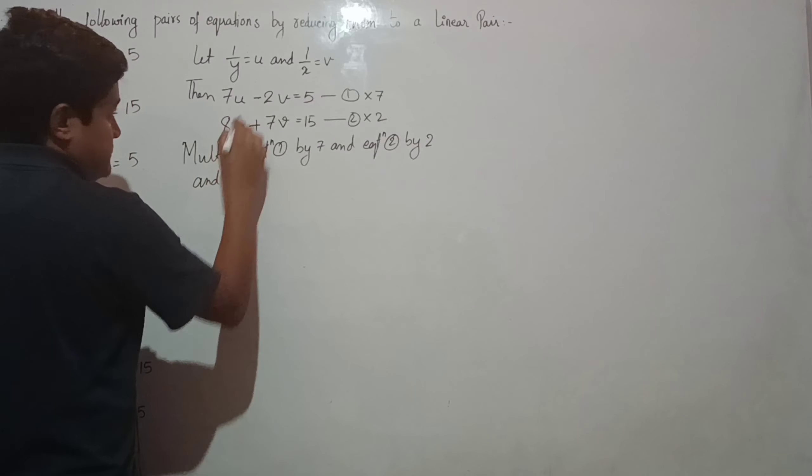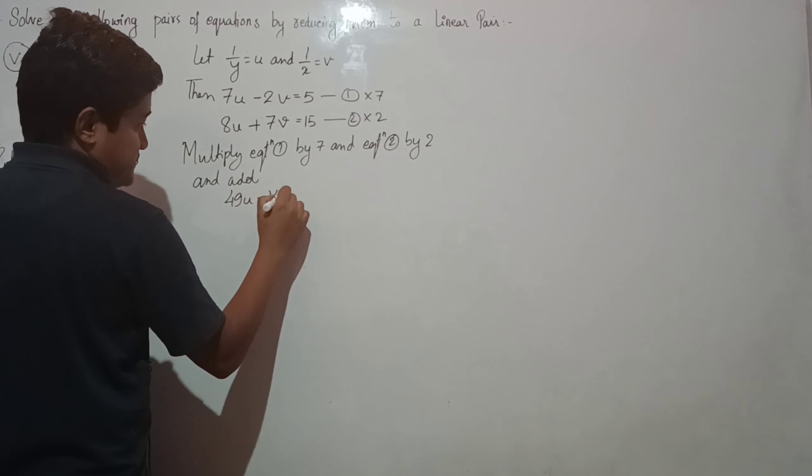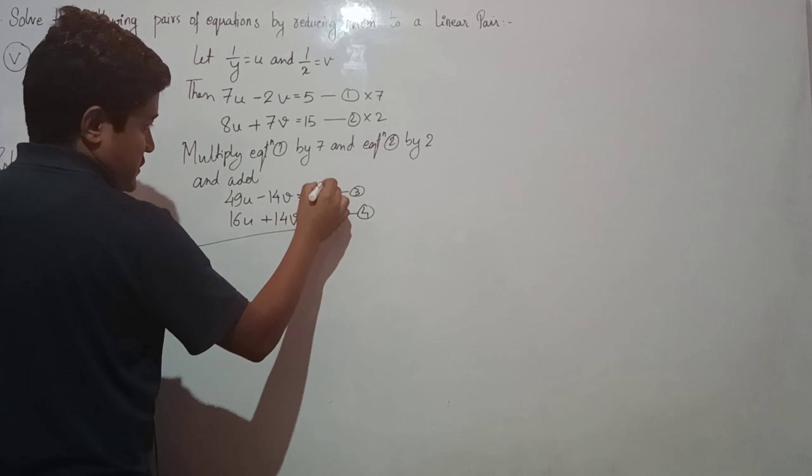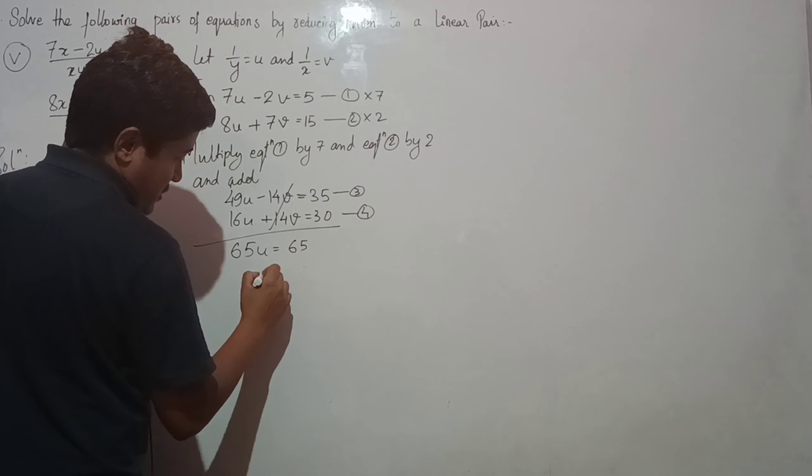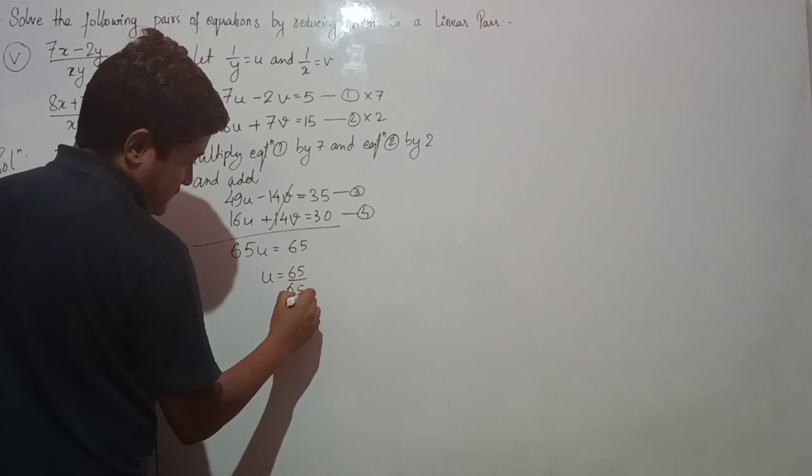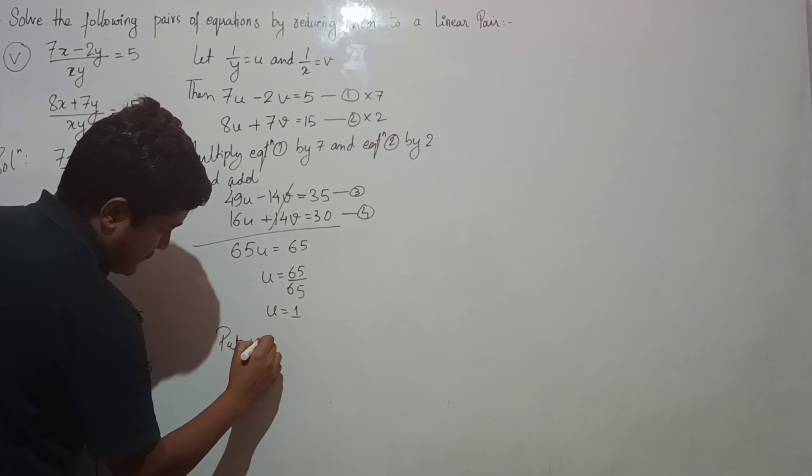7 times equation 1: 49u minus 14v equals 35. 2 times equation 2: 16u plus 14v equals 30. Adding these, the v terms cancel. 49u plus 16u equals 65u, and 35 plus 30 equals 65. So 65u equals 65, therefore u equals 1.